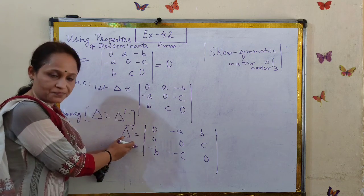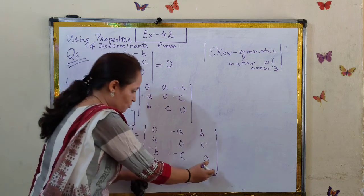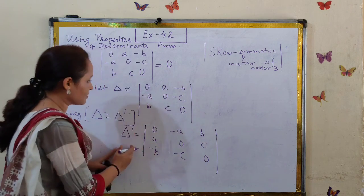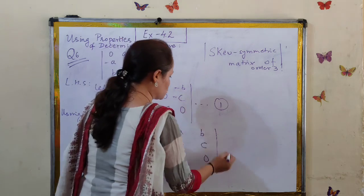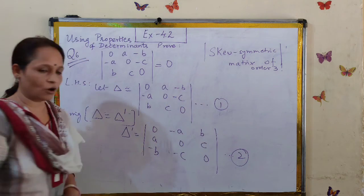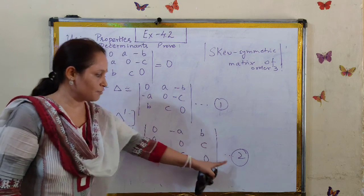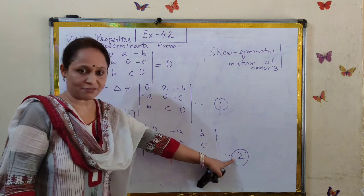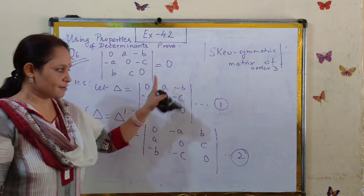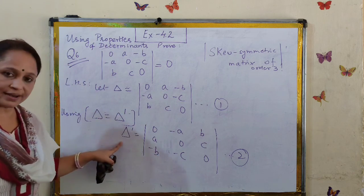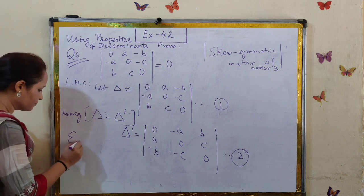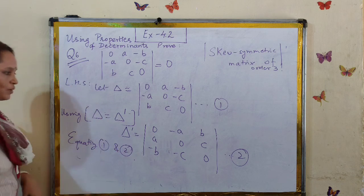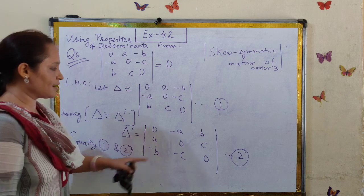So the left-hand sides are equal. Naturally the equation will be balanced, so the right-hand sides should also be equal. Let's number these as result 1 and result 2 — before and after applying the property. Equating the right-hand sides of 1 and 2, we get that these two determinants are equal.